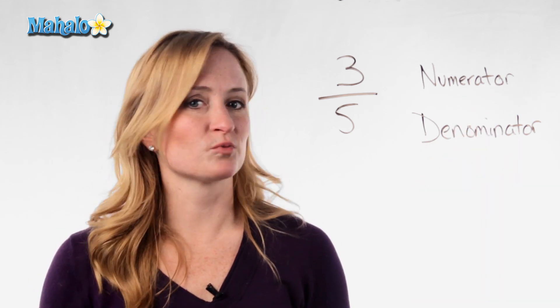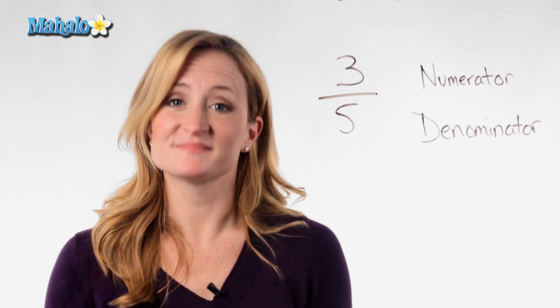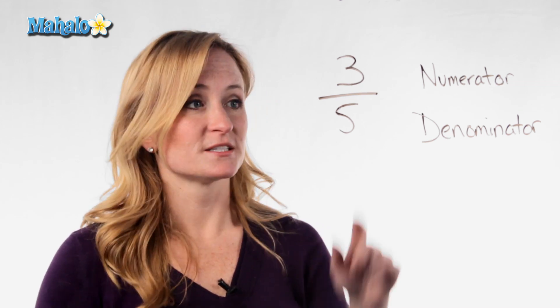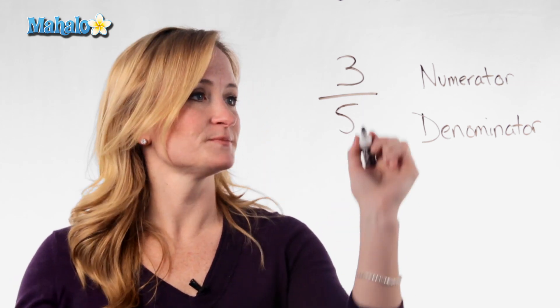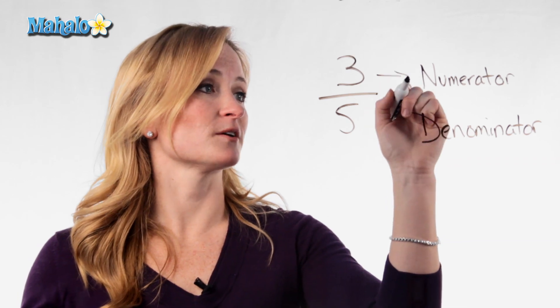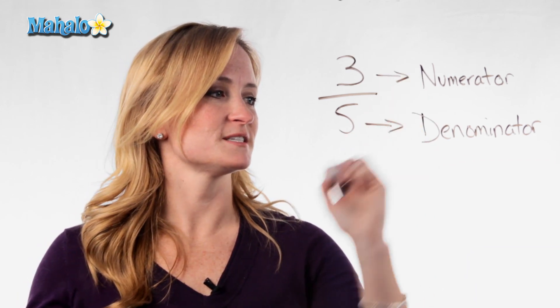Basically, they're just really big fancy words for top number and bottom number. So in this fraction, 3 over 5, 3 would be the numerator and 5 would be the denominator.